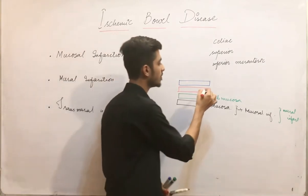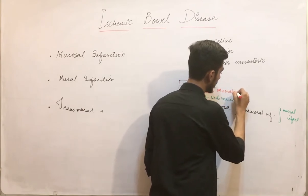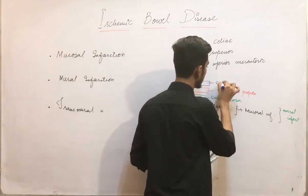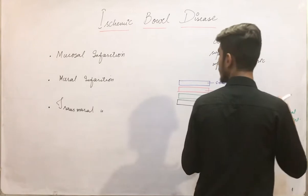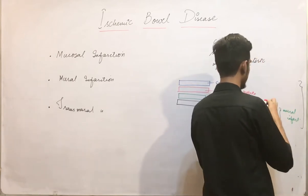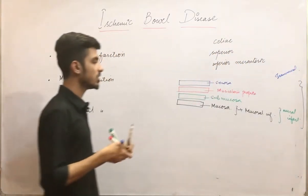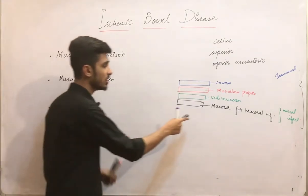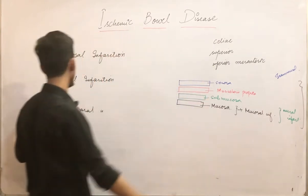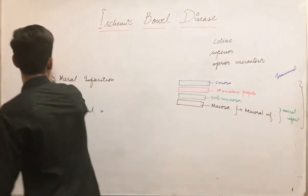The third type is transmural infarction. Transmural infarction involves the muscularis propria and the serosa — meaning all four layers are involved. So: mucosa only = mucosal infarction; mucosa and submucosa = mural infarction; all layers including muscularis propria and serosa = transmural infarction.